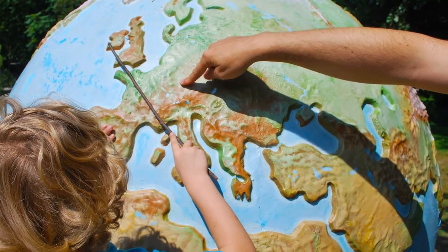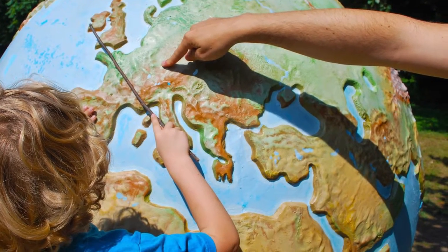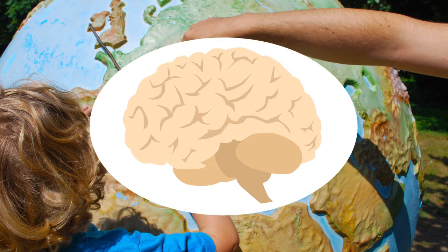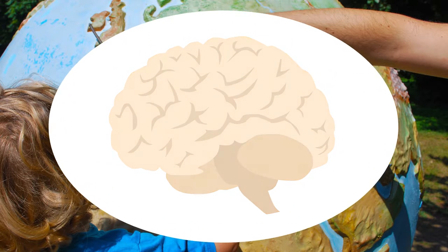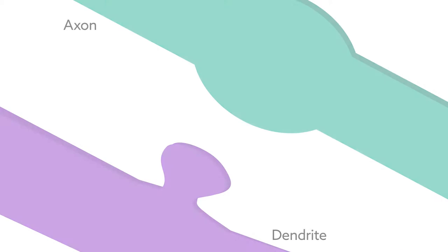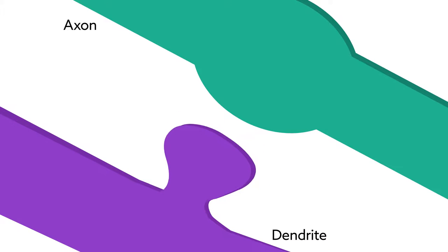Learning something new not only changes our perspectives and behavior, it actually changes the structure of our brains. Memories and experiences are recorded in the brain by altering the physical connections between neurons.